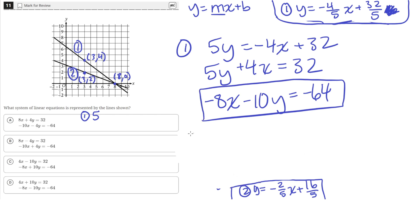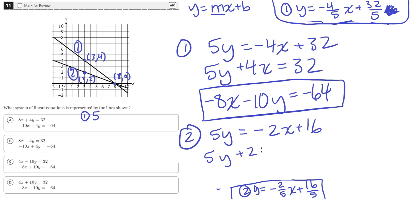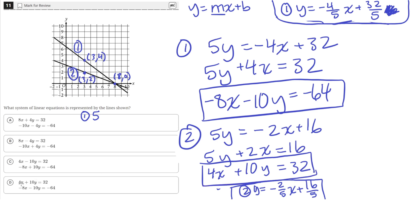Similarly for equation 2, we multiply both sides by 5 to get 5y equals negative 2x plus 16. Moving negative 2x to the other side gives 2x plus 5y equals 16. Multiplying this equation by 2 gives 4x plus 10y equals 32. This matches the equations in answer choice D. So these two equations represent the two lines, and D is the correct answer.